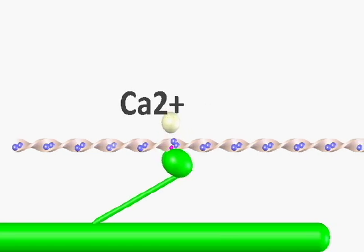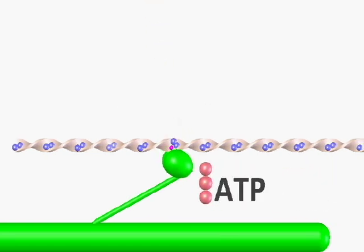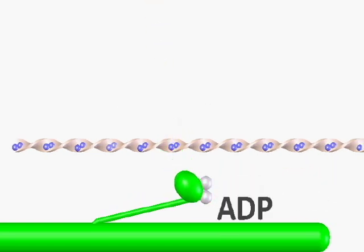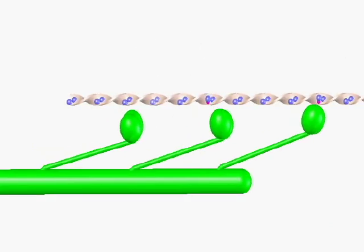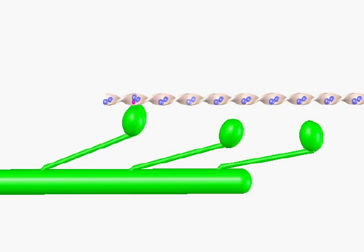This reaction converts the ATP to a low energy molecule called ADP. The ADP is removed from the cell and the cycle can start over again. Inside each sarcomere are many myosin heads working together to make the sarcomere shorter.